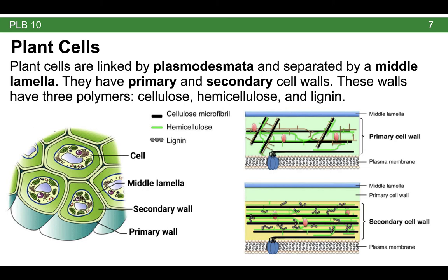Let's think more carefully about plant cells and specifically that plant cell wall. Plant cells are linked together by special cell-to-cell junctions called plasmodesmata, which are structures unique to plants — they don't occur in animals. Each cell is separated by something called a middle lamella. If you zoom in and look at the figure on the left-hand side, you can see a whole bunch of cells, and the place where I'm putting all these red marks is where you would find the middle lamella — that's the space in between all of these cells.